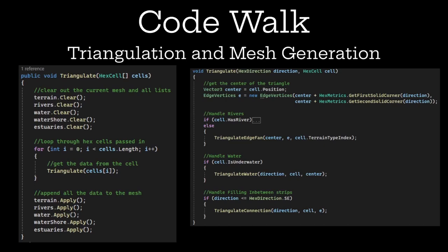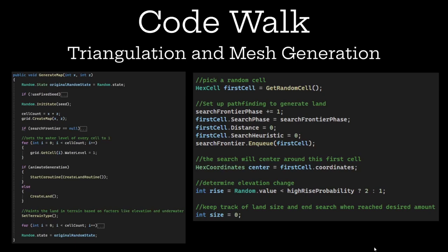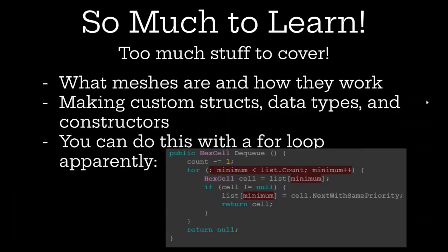The map generation is essentially taking all of that data about the hexes and, after generating a flat blank plane, adding more and more on top of it to make it look like a terrain. There is so much to learn, and this tutorial covered so much I didn't even talk about here. Mostly I figured out what meshes are and how they work — what triangles are, why their order matters, why the order of vertices matters, how UVs are mapped onto vertices. I also had more experience making custom structs, data types, and constructors — things that Unity doesn't have that we can make for our specific use case. And apparently you can do this with a for loop.